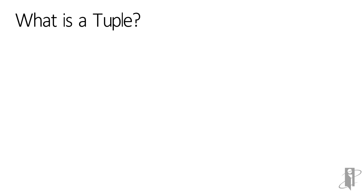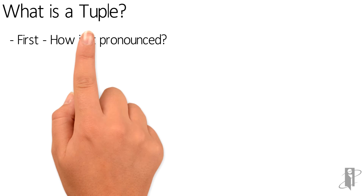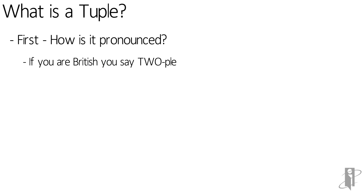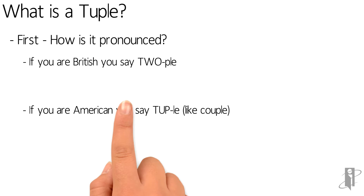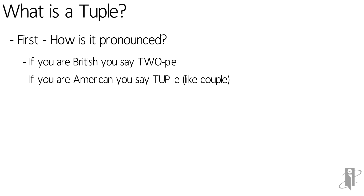First of all, how do we pronounce it? Well, if you're British, you say it like 'tuple.' If you're American, you say 'tuple,' kind of like 'couple.' So it depends on whether or not you want to sound British or not.